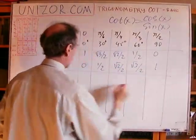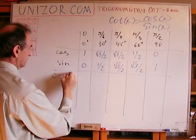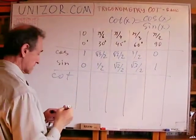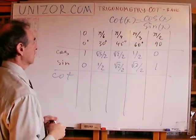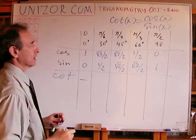So, what are the values of my cotangent? Well, let's divide one by another. In this case, it does not exist because denominator is equal to 0.